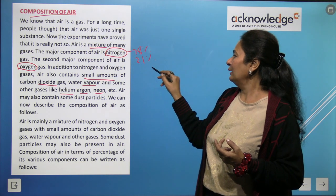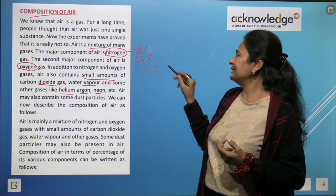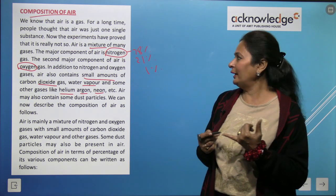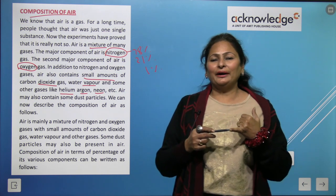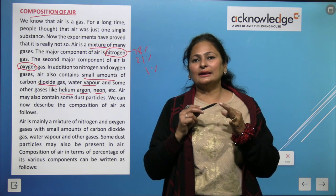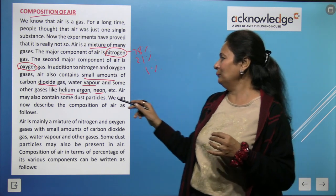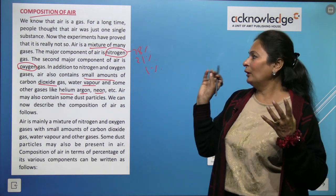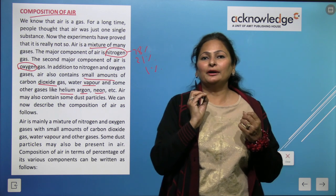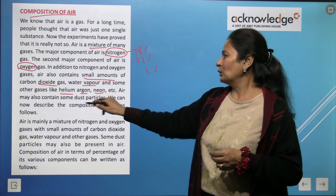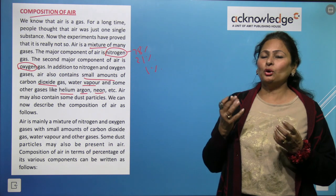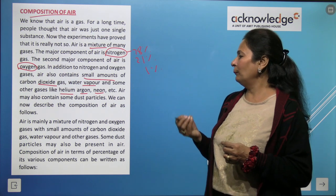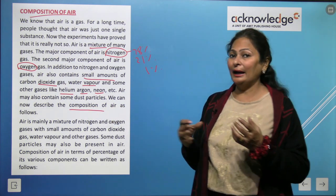The second major component is oxygen at about 21%. In addition to nitrogen and oxygen, air also contains small amounts of carbon dioxide, water vapor, and other gases like helium, argon, and neon — together about 1%. Air also contains some dust particles.